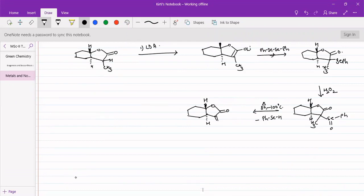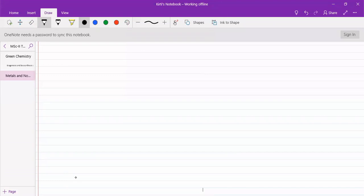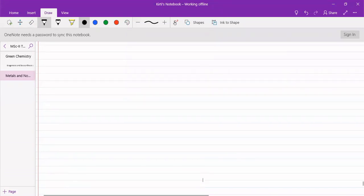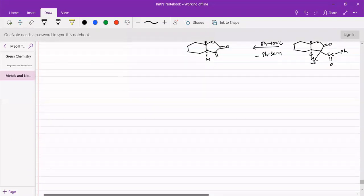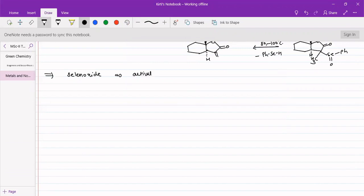Similarly, the selenoxides can act as an activating group also. Here if we have a phenyl methyl selenide, it will be reacting with H2O2 to form selenoxide. This when subjected to LDA will be removing the proton from here.